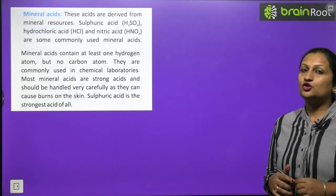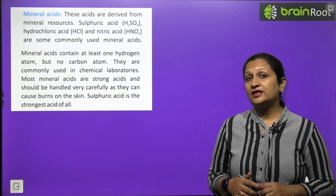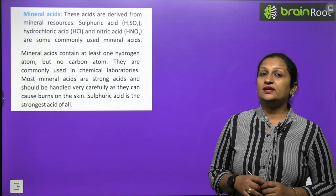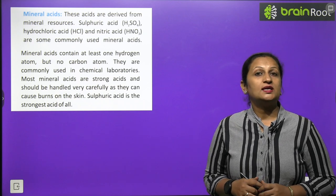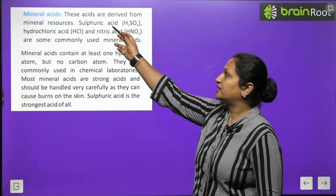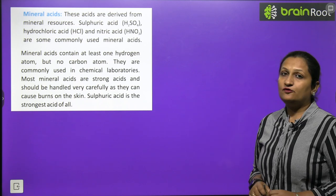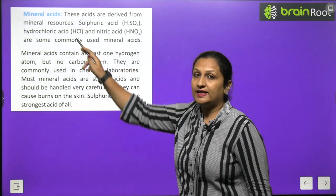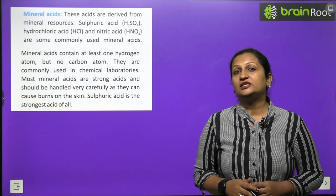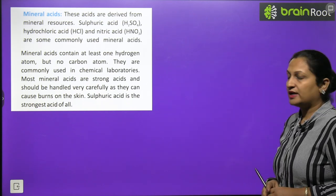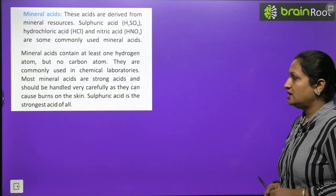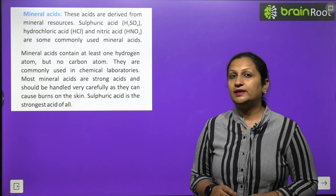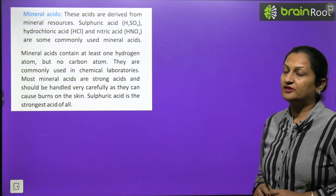Now mineral acids. These acids are derived from mineral resources. Sulphuric acid, hydrochloric acid, and nitric acid are some commonly used mineral acids. Mineral acids contain at least one hydrogen atom but no carbon atom. They are commonly used in chemical laboratories. Most mineral acids are strong acids and should be handled very carefully as they can burn your skin. Sulphuric acid is the strongest of all, so it can be called the king of acids. These are very dangerous.